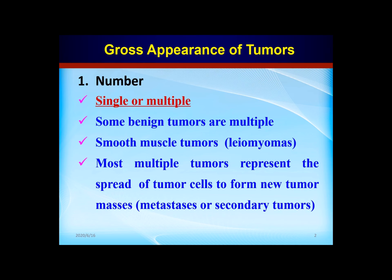Now let's learn the gross appearance of tumor. First, number. The number can be single or multiple. Some benign tumors are multiple. For example, leiomyoma — a benign tumor derived from smooth muscle cells. Most multiple tumors represent the spread of tumor cells to form new tumor masses. We call these secondary tumors or metastasis.